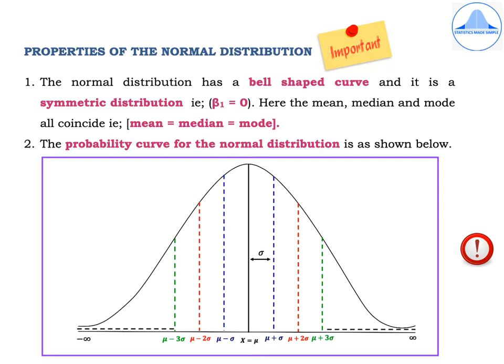Property 1: The normal distribution has a bell-shaped curve and it is a symmetric distribution. The area on both tails of the curve should be equal, meaning beta 1 will always be equal to 0. For a symmetric distribution, the mean, median and mode will all coincide — that is, mean equals median equals mode.